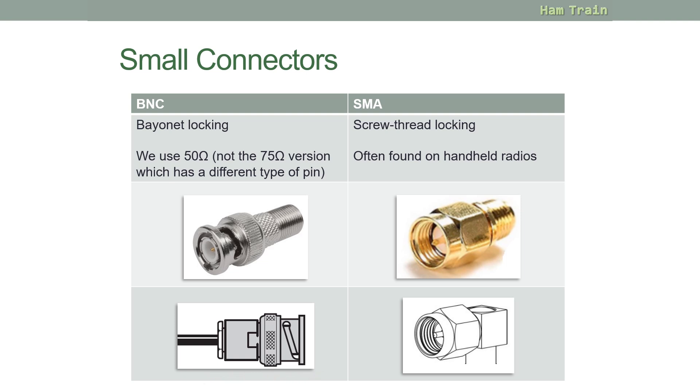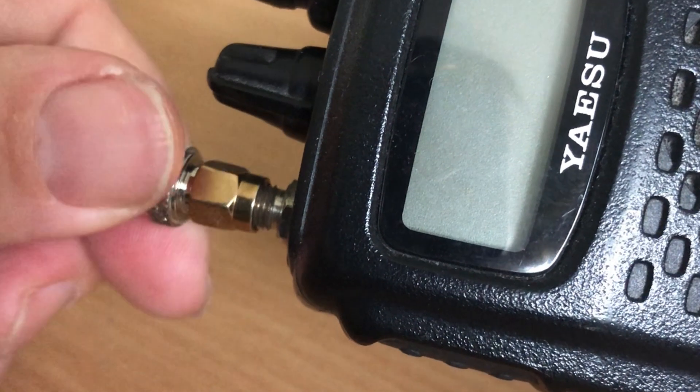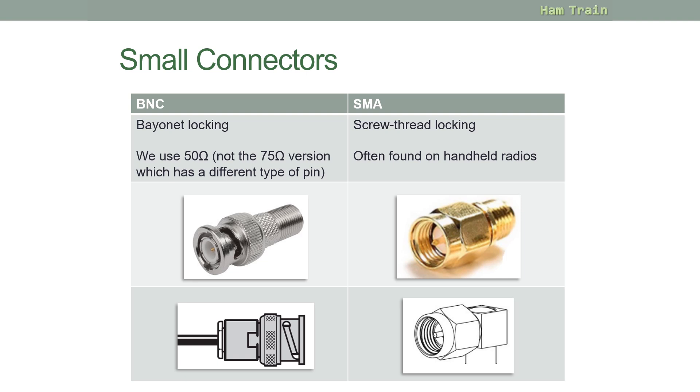And finally for connectors, the SMA connector. Like two of the other ones we've previously looked at, this is a screw thread locking plug. Screw thread there. Often found on handheld radios. Here is a picture and again the line drawing.